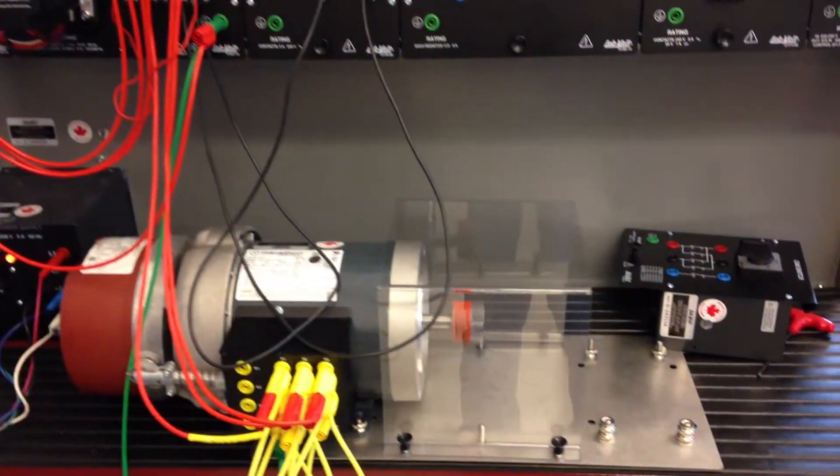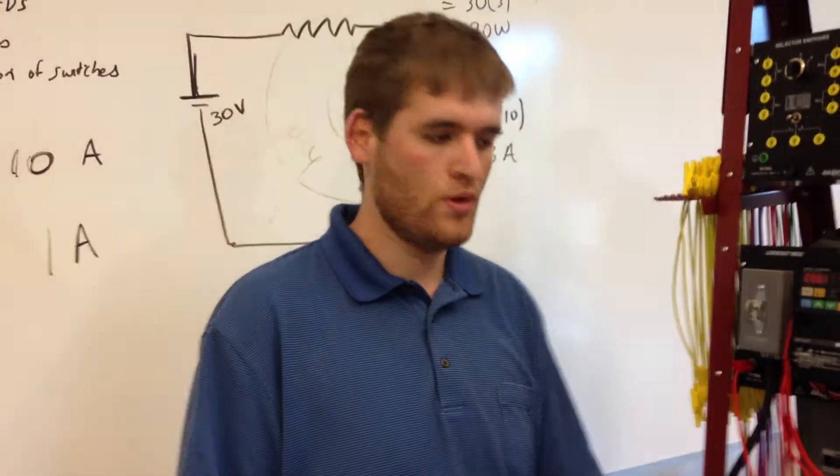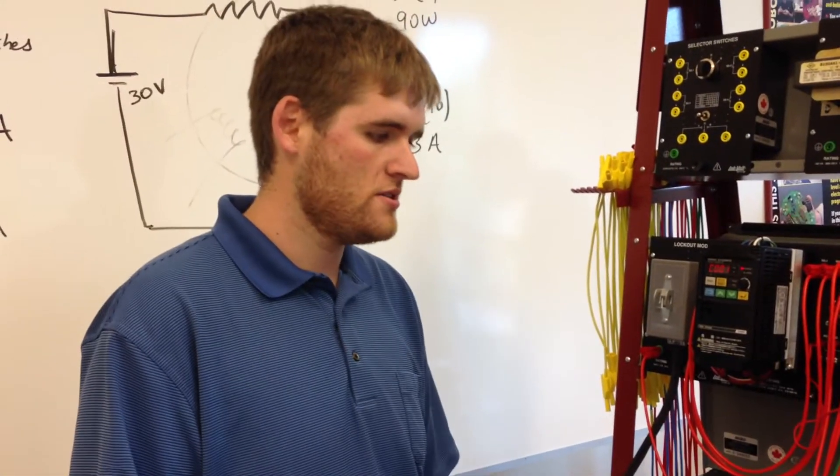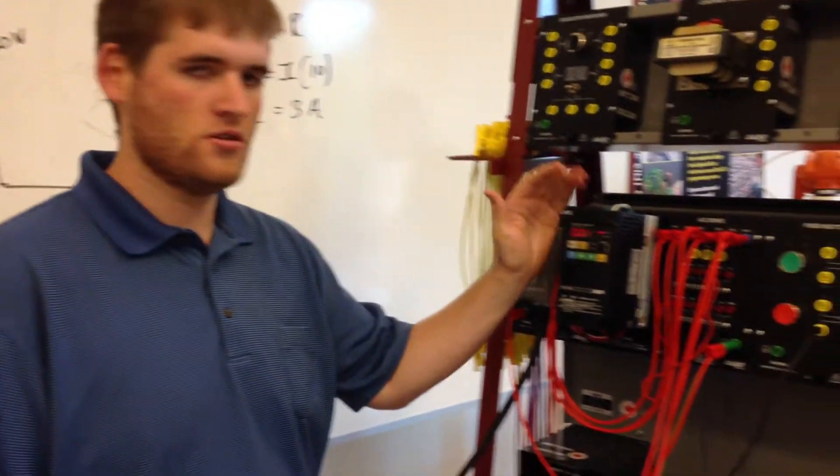And the motor is slowing down quicker than it would if it were coasting, but not as quick as it would with the friction brake engaged. So that is DC Braking using an Omron SysDrive VFD.